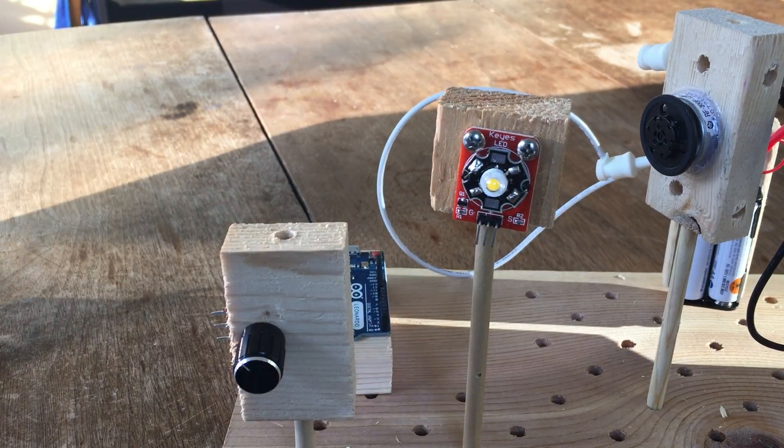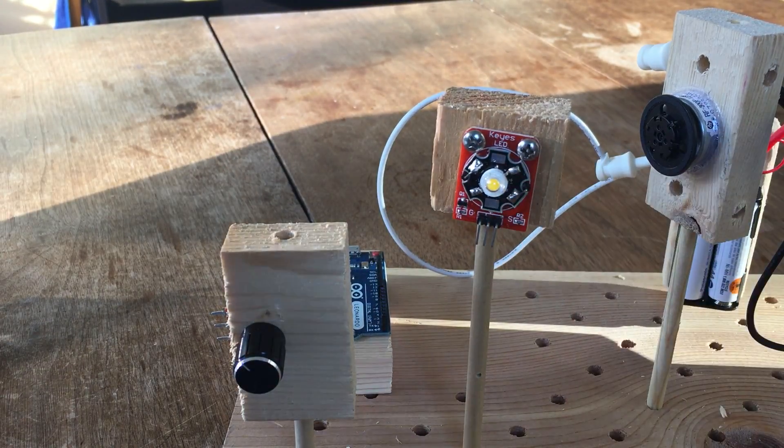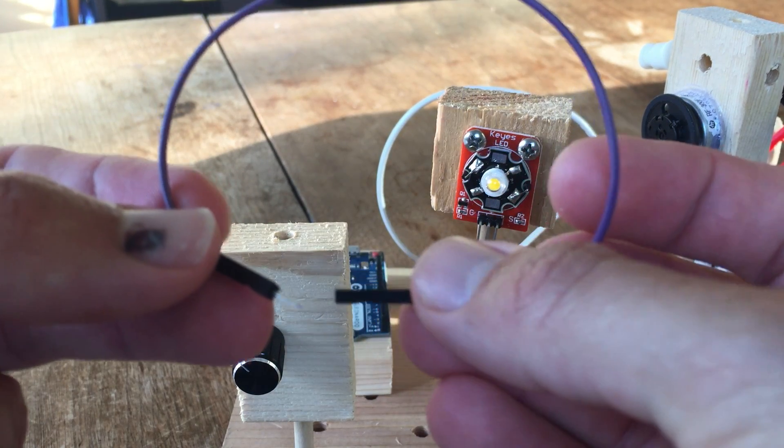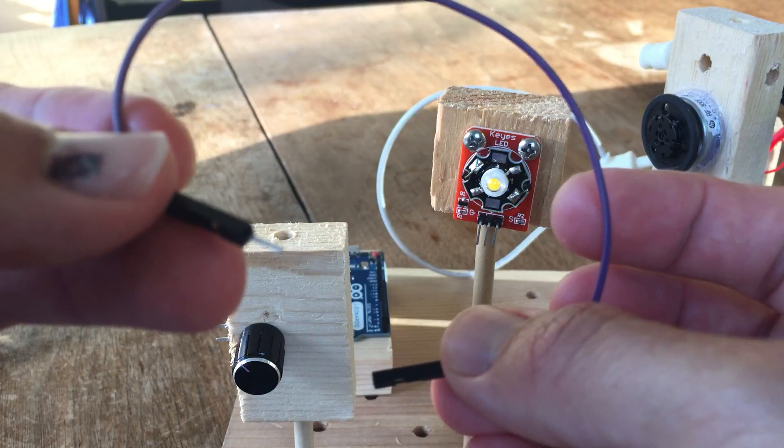First, we're going to connect the 3-watt circuit. We're going to be using jumper wires, female to male.